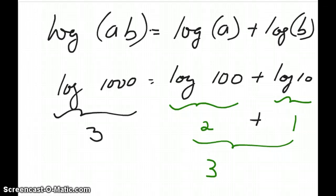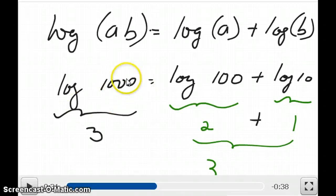Log of 1000, we know if we do this in our calculator, will give us 3. You can see that 1000, of course, is 100 times 10. So we can write it as log of 100 times 10, which is log of 100 plus log of 10. Log of 100 is 2, log of 10 is 1, 2 plus 1 is equal to 3. So the two sides are equal to each other.